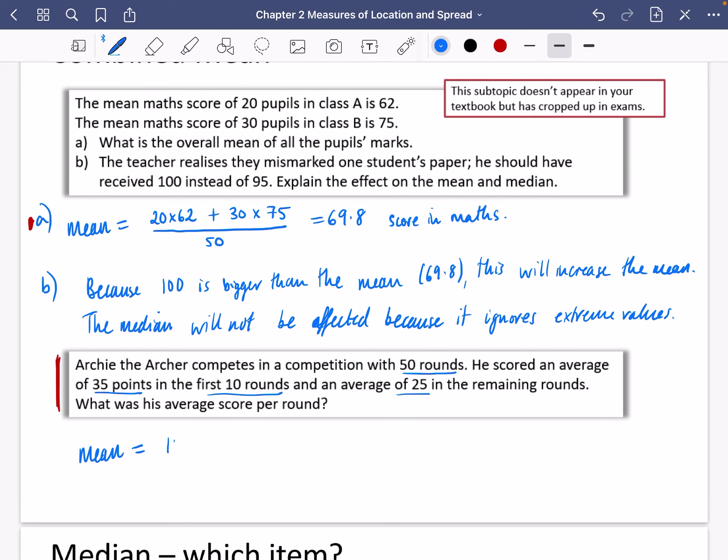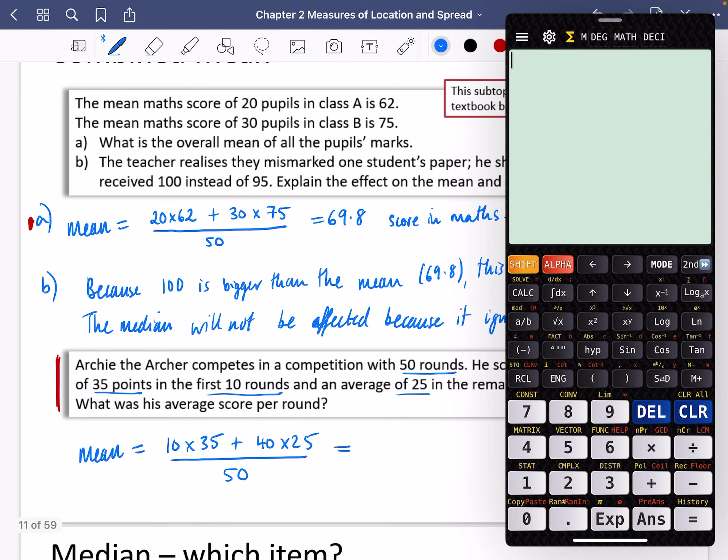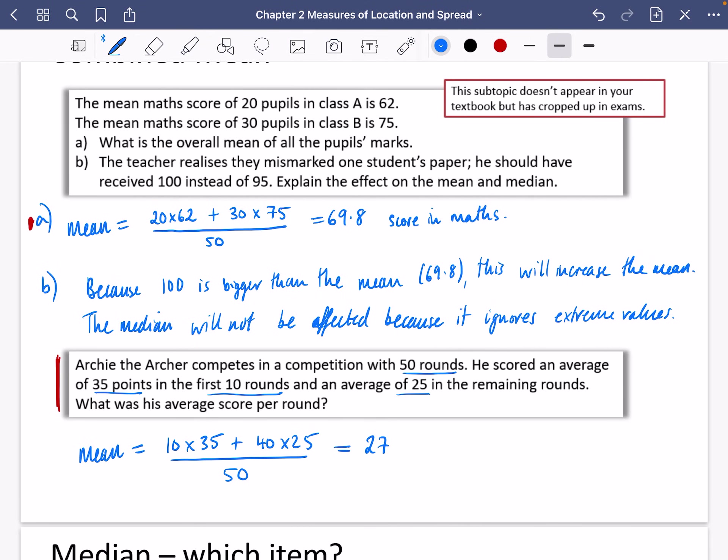So in the first 10 rounds, he got an average of 35, meaning 35 per round. And in the last 40 rounds, he got an average of 25. And we're going to divide that by the number of rounds that he did, which is 50. So we're going to do 10 times 35 plus 40 times 25, all divided by 50. So his average was 27 points. And that's what we mean by the combined mean.